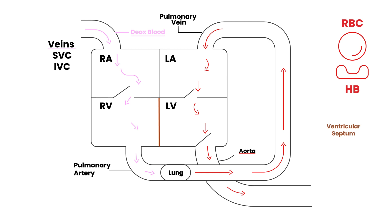The septum moves to the right. That is the main problem. That one move — deviating to the right — causes this entire Tetralogy of Fallot.